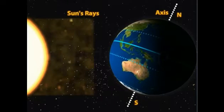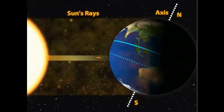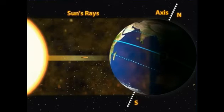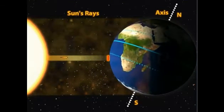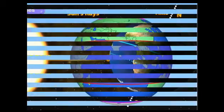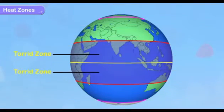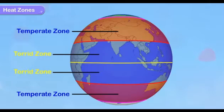Same happens when the rays of the sun fall on the earth. Based on the heat received from the sun, the earth is divided into different heat zones: the torrid zone, the temperate zone, and the frigid zone.